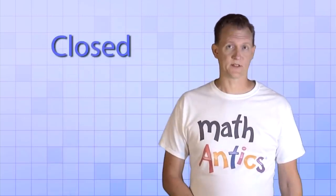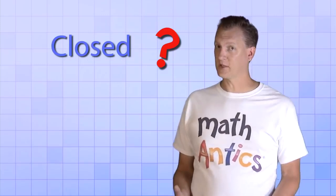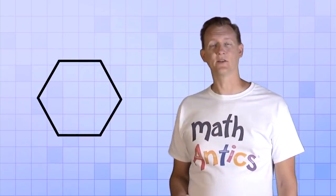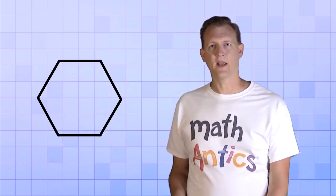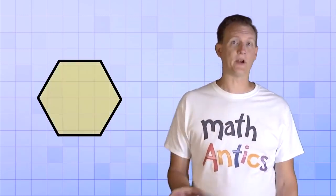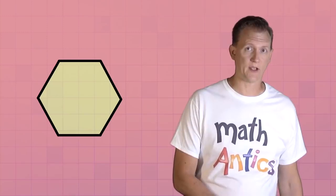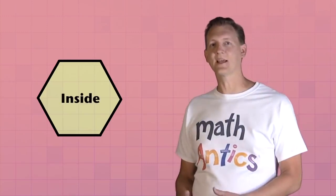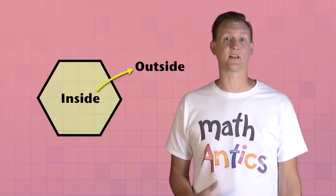The next thing we need to know about polygons is that they're closed shapes. Now what does it mean for a shape to be closed, you ask? Well, it means that the sides are connected so that there are no gaps. The area inside the shape is separated from the area outside the shape, and there's no way to get from the inside to the outside without crossing a line.